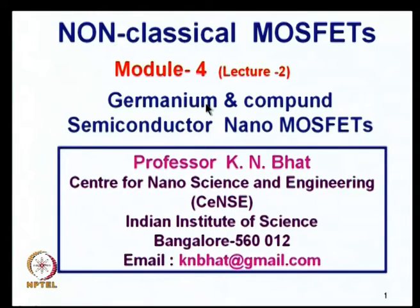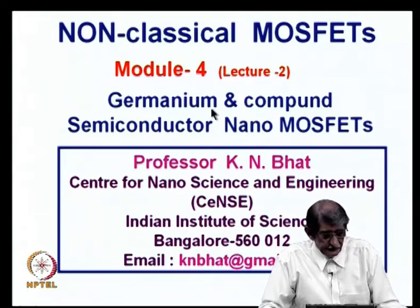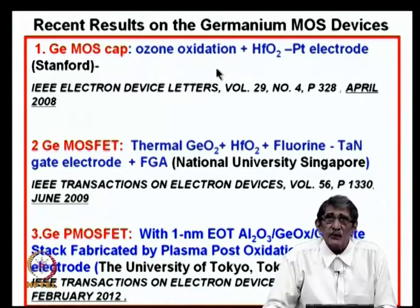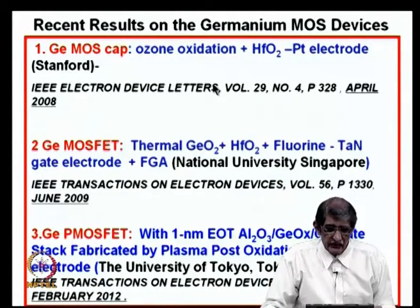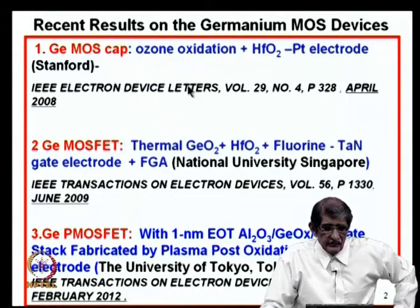We have had one session on non-silicon based devices, specifically germanium based devices. In module 4, we continue on the germanium based MOSFET and take a look at compound semiconductor materials and devices. We had seen what problems are involved in using germanium for MOS devices — the most important being surface preparation and what dielectric to use.